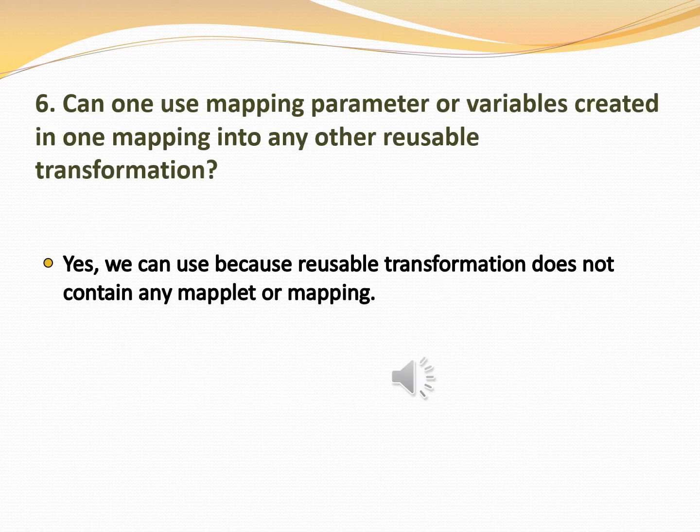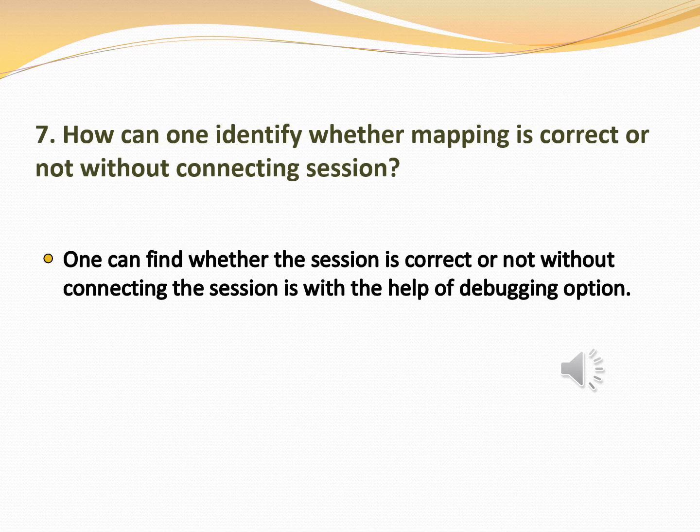The sixth question is: can one use mapping parameters or variables created in one mapping into any other reusable transformation? Yes, we can, because a reusable transformation does not contain any maplet or mapping. The seventh question is: how can one identify whether a mapping is correct or not without connecting a session? One can find whether the mapping is correct or not without connecting the session with the help of the debugging option.